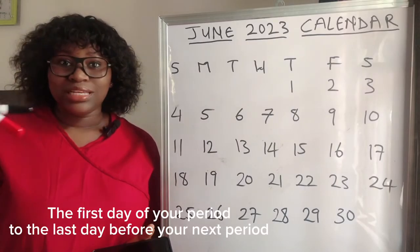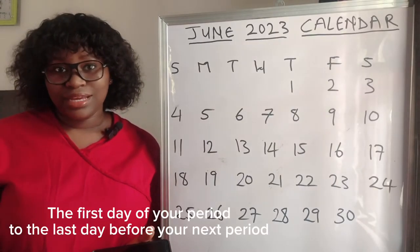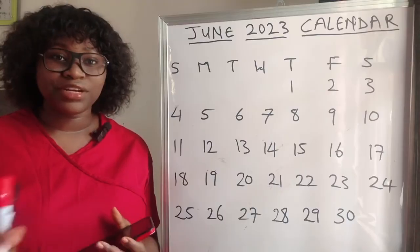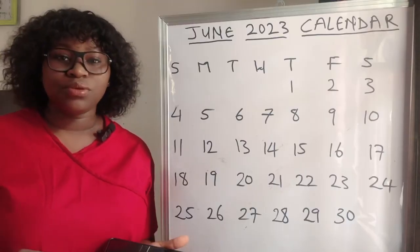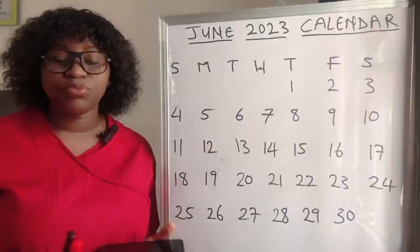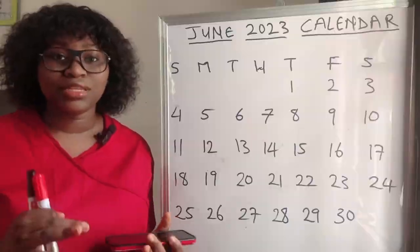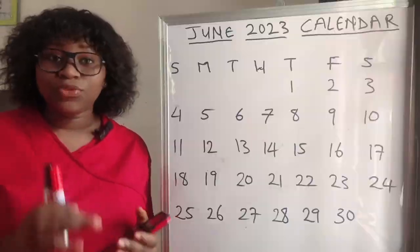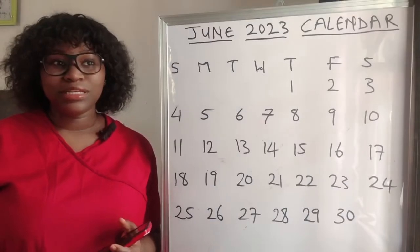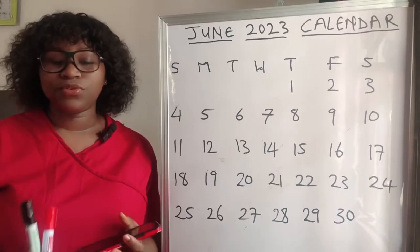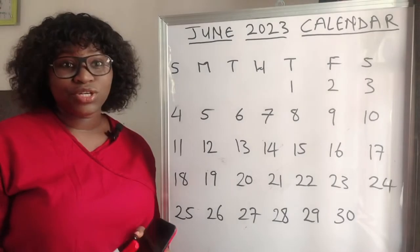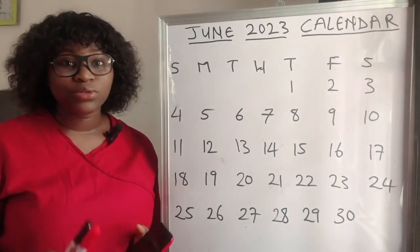Your menstrual cycle is from the first day of your period to the last day before your next period. The length varies for different women. For some women it's 28 days, which is the average, but not every woman gets 28 days and not every woman's menstrual cycle is regular. Cycle length ranges from 21 days to 35 days.